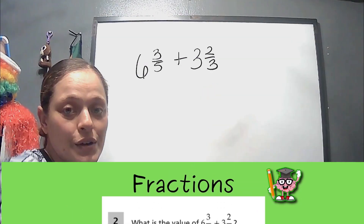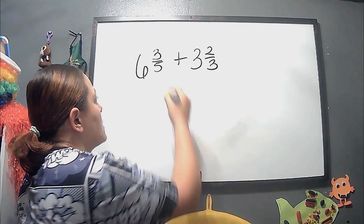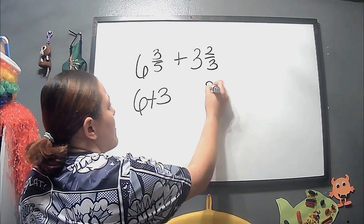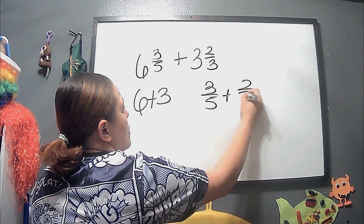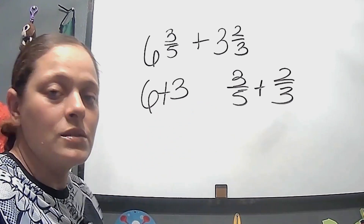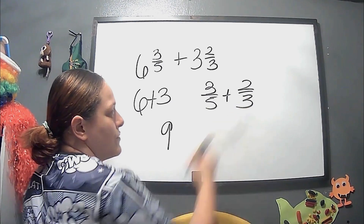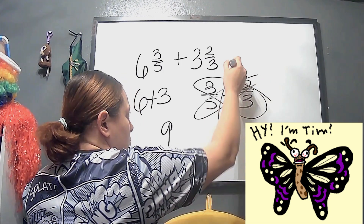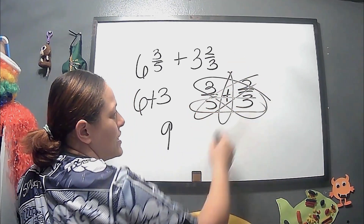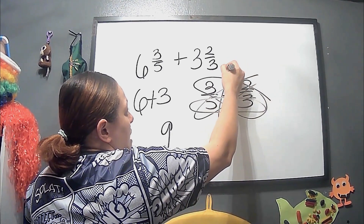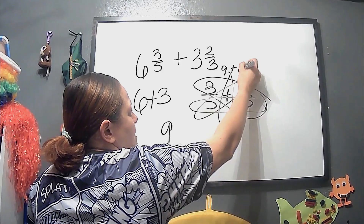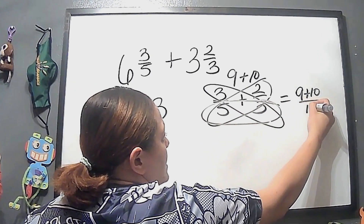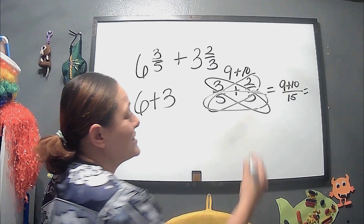Let's go to the next part. We have 6 and 3 fifths plus 3 and 2 thirds. The way to add this is: first we do the wholes — 6 plus 3. Then we have 3 over 5 plus 2 over 3. So 6 plus 3 is 9. Then we can do the butterfly method — we multiply 3 times 3 which is 9, plus 2 times 5 which is 10, so that's our numerator. The denominator is 5 times 3 which is 15.